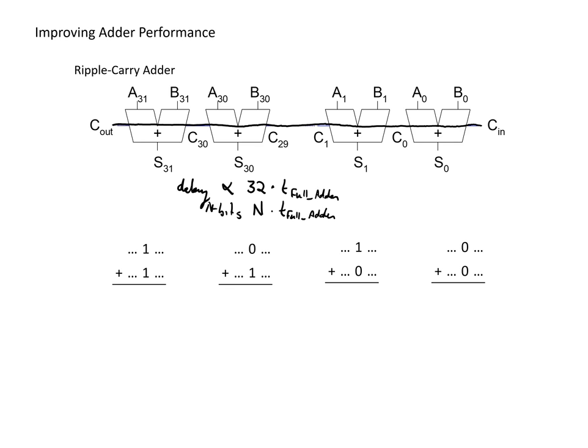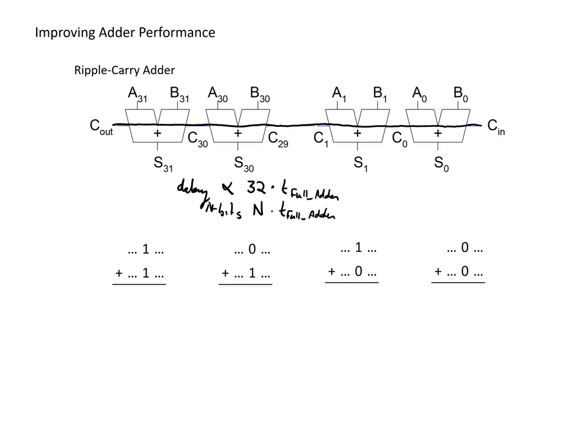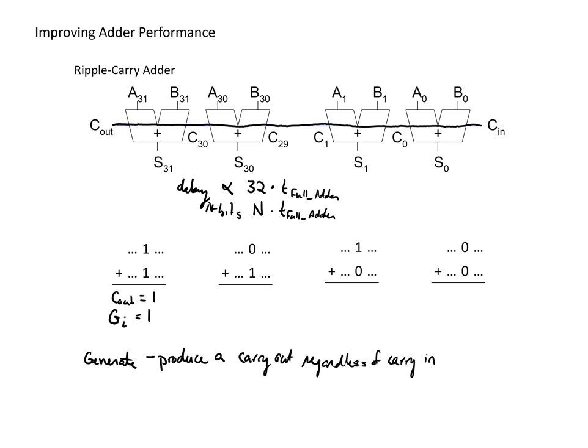To get us started, we're going to look at any random two bits being added somewhere in this sequence — what can we tell about the carry out of this bit position based just on these two bits, without knowing anything about the carry in. In the first case, we have two ones, one in each position, so we can say for sure we're definitely going to have a carry out regardless of what the carry in is. This is referred to as the i-th bit position generating a one — meaning we're going to produce a carry out regardless of the carry in.